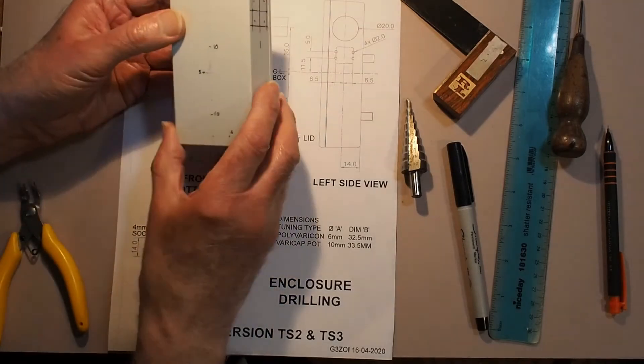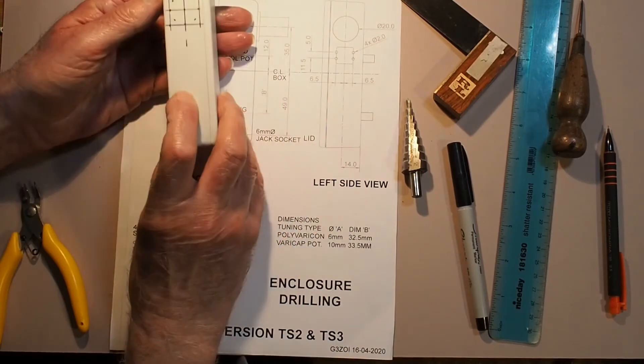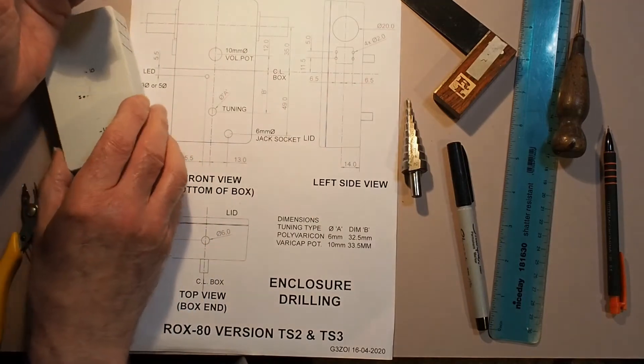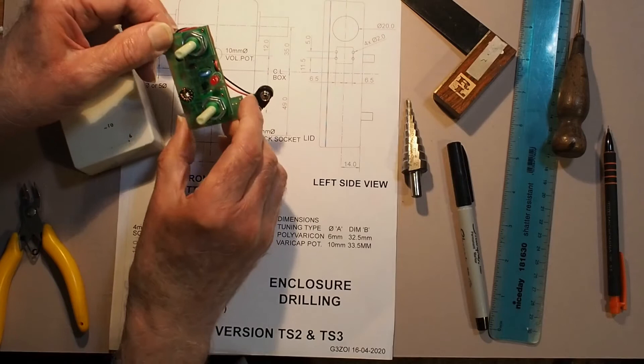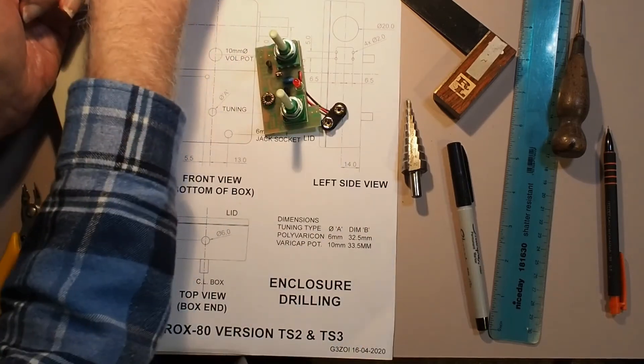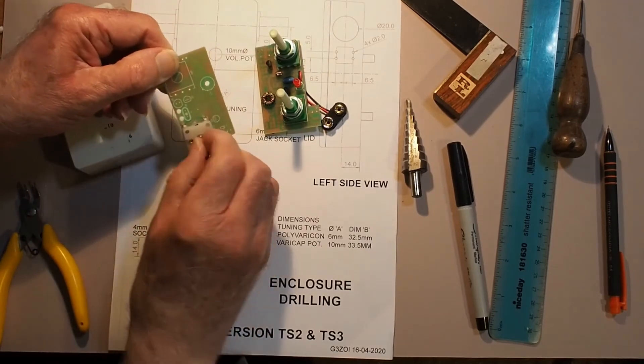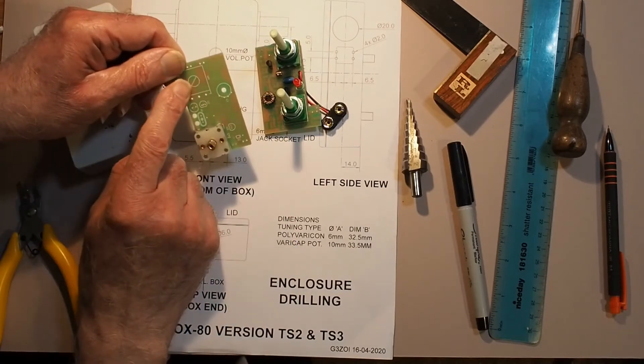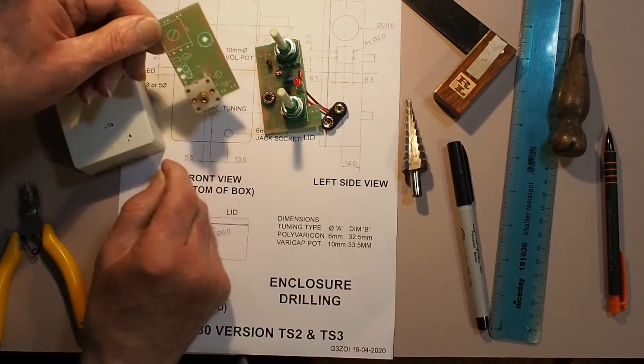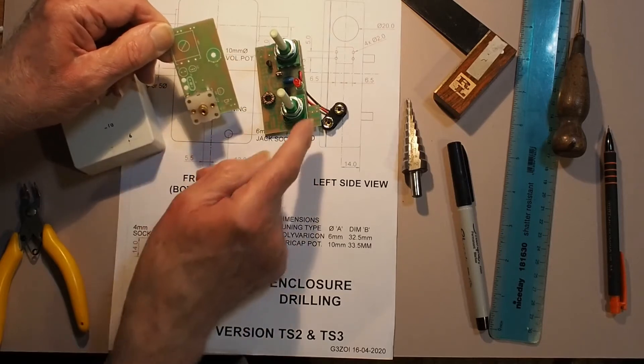Now here's one I've done earlier with all the hold positions marked on the box. It's worth noting at this point that there are two versions I've produced of the printed circuit board. This one uses a varicap diode for tuning with a potentiometer. This one uses a variable capacitor for tuning. There's a very slight difference in the dimensions between the two controls, and this version needs a smaller hole for the tuning - 6 millimeter against 10 millimeter.